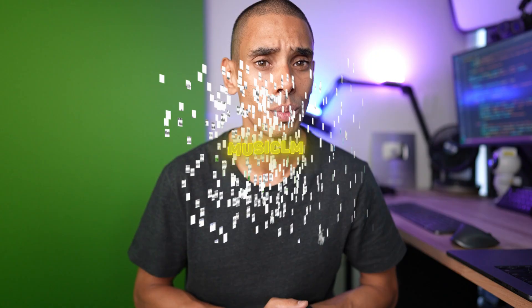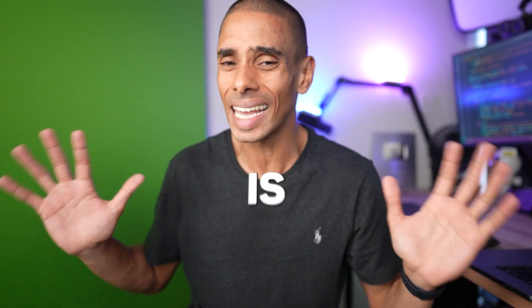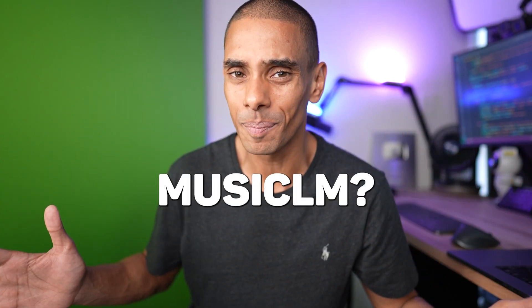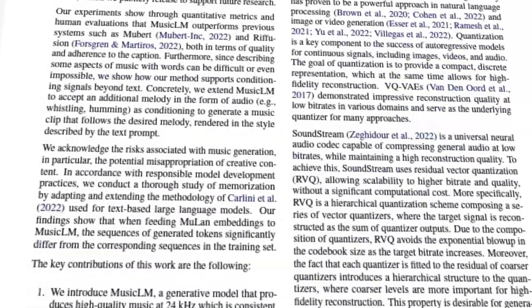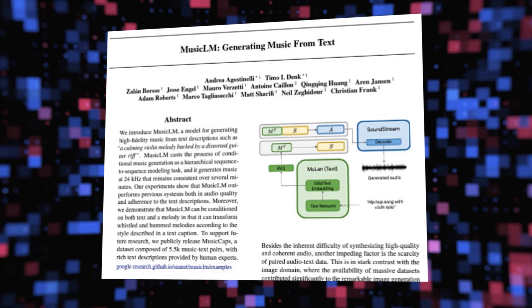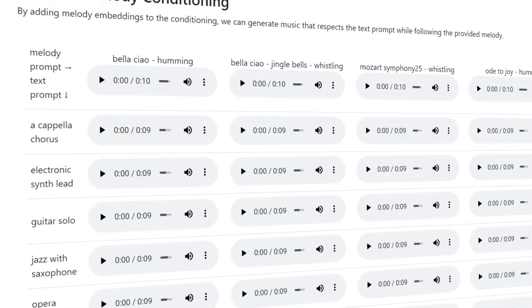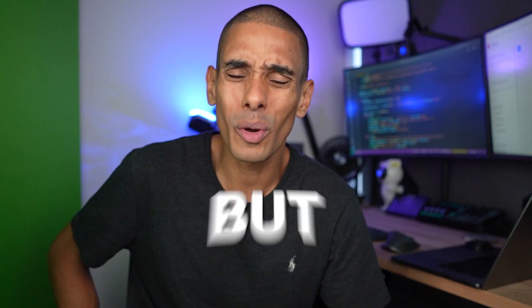Even though ChatGPT has been stealing headlines the world over, it's not the star of this video. That title goes to another contender: MusicLM. But what exactly is MusicLM? It's a machine learning model developed by researchers at Google that's able to generate high-fidelity music from text descriptions.